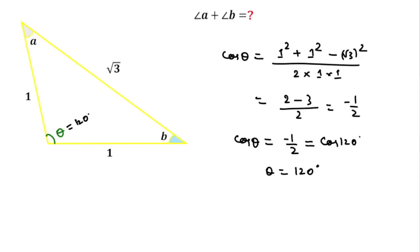So we can write angle A plus angle B equal to 180 degree minus this theta angle, that is 120 degree, which is equal to 60 degree. So 60 degree will be the right answer for this question.